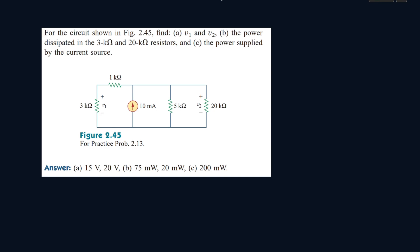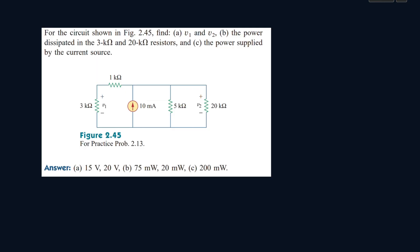We see a circuit here. We have to find v1, v2, the power dissipated in the 3 kilohm and 20 kilohm resistors, and the power supplied by the current source. The first thing we see is one whole node, so let's call it node A and write the directions of current.